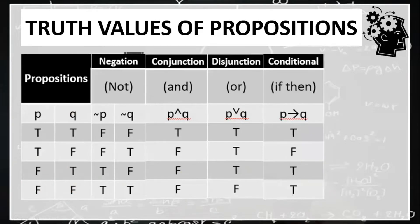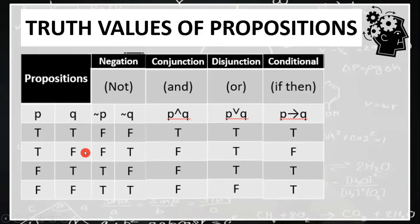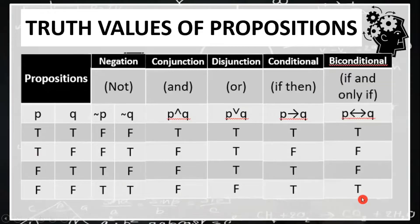For conditional, that is 'if-then,' and it is denoted by this arrow. It can only be false if your hypothesis is true and your conclusion is false. Otherwise, it is true.